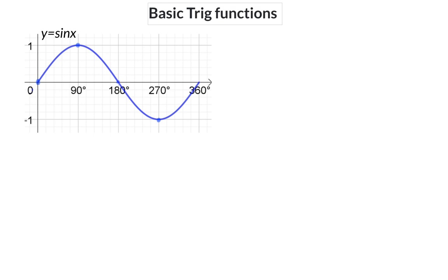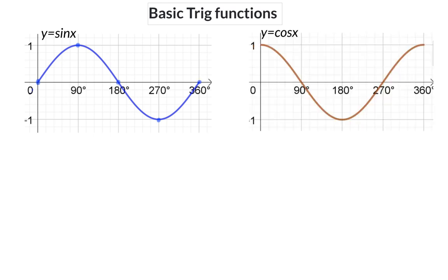The sin graph has x-intercepts at 180 and again at 360 degrees. The function y equals cos x starts at the coordinate (0, 1), and also takes 360 degrees to complete one full wavelength. It has a turning point at (180, -1) and again at (360, 1), and x-intercepts at 90 degrees and 270 degrees.